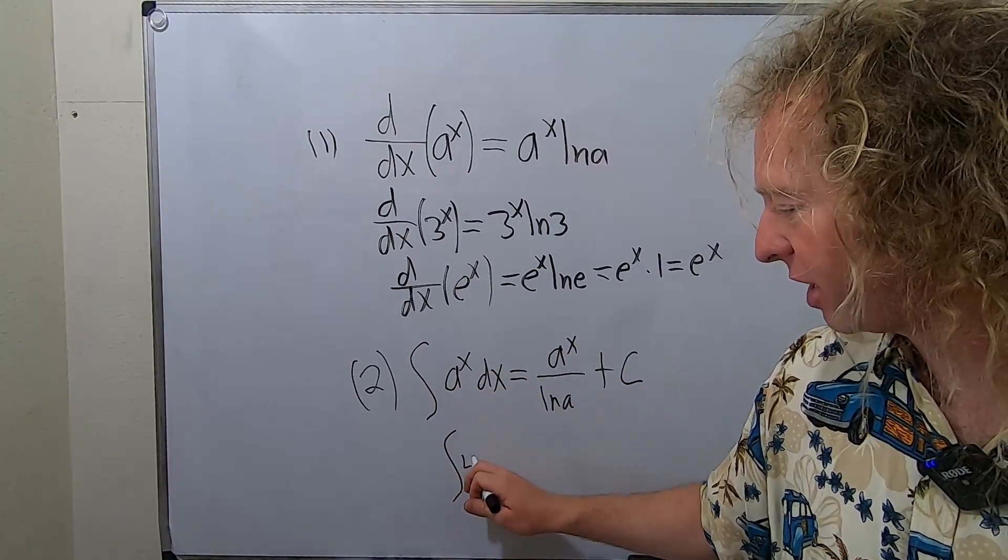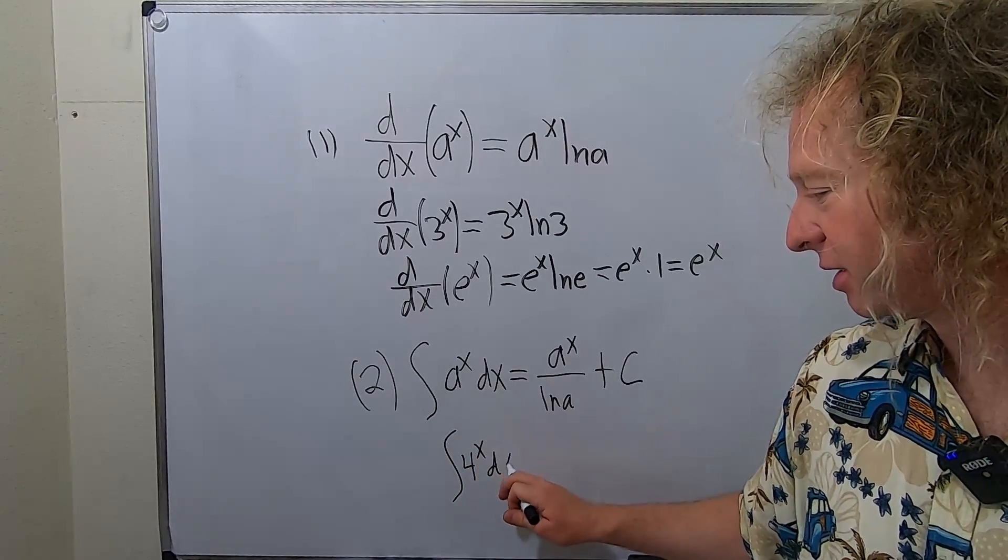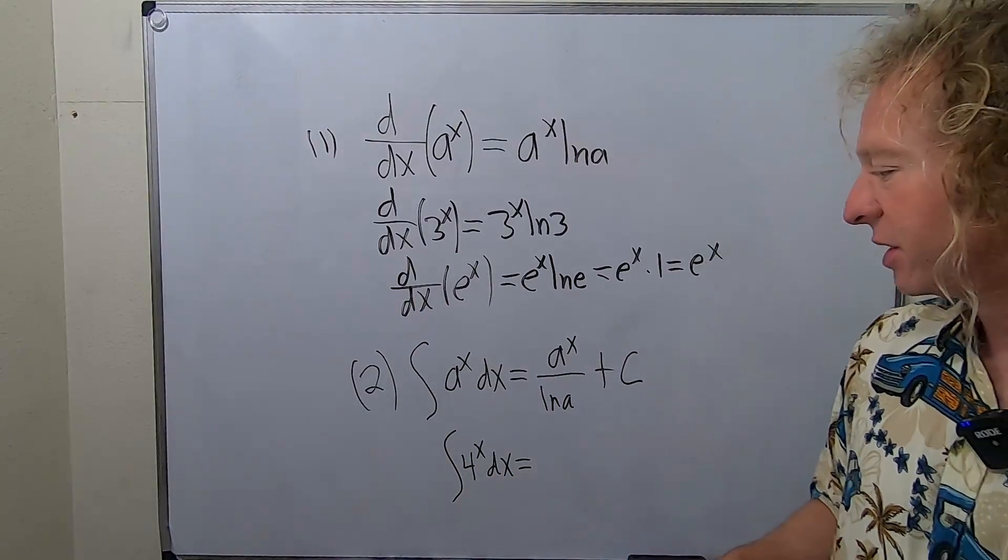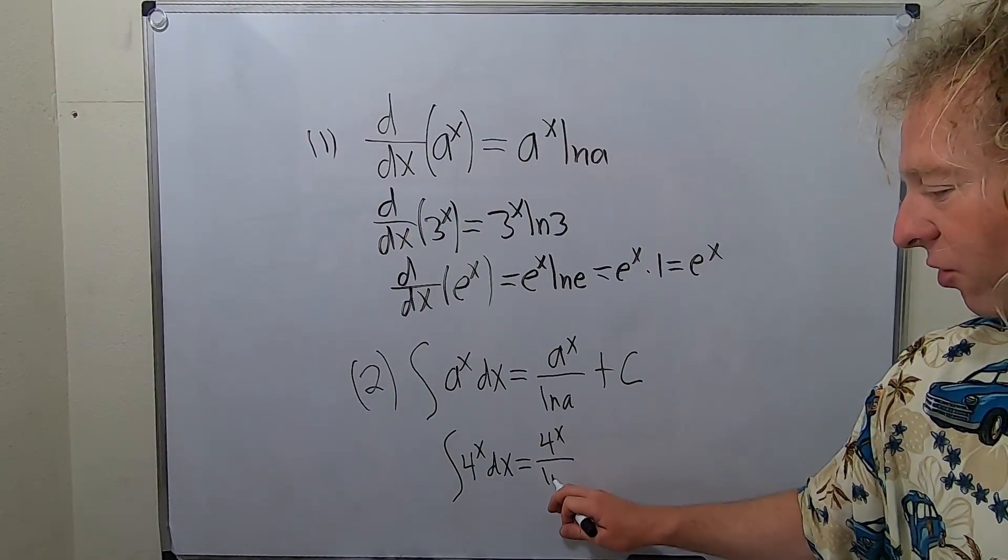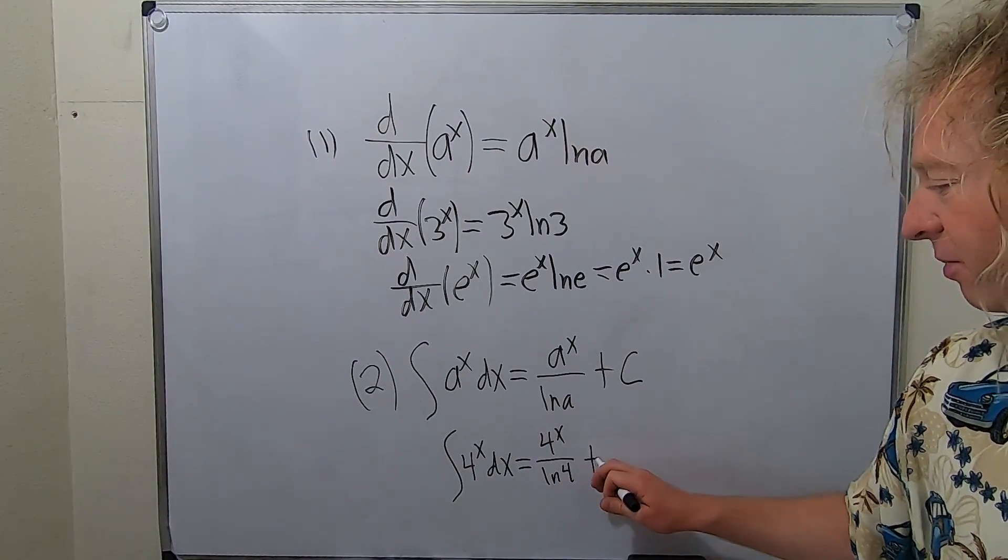Here's an example. Say we have 4 to the x dx. So in this case, it'll just be 4 to the x. And then you just divide by the natural log of 4. And you put a plus c.